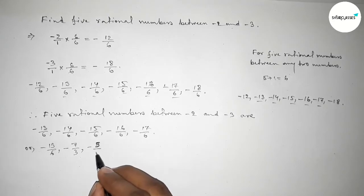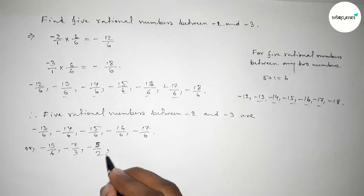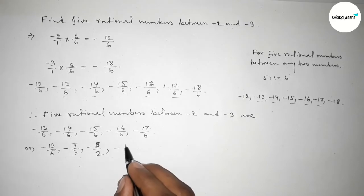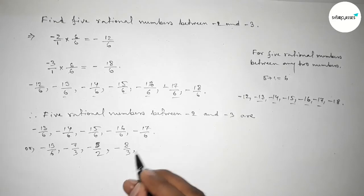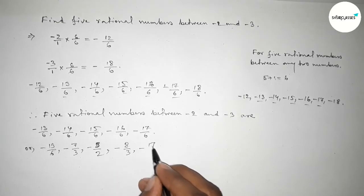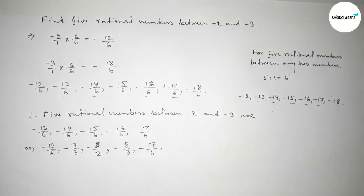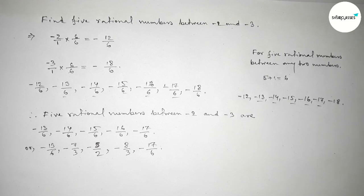If you divide both numbers by 3, then this is minus 5 over 3, and if you divide both numbers by 2, then minus 8 over 3. And the last one is minus 17 over 6. So that's all. Thanks for watching. If this video is helpful to you, please share it with your friends. Please like, share, and subscribe.